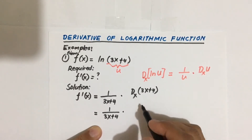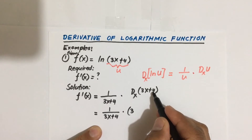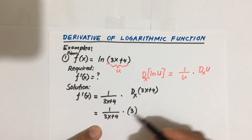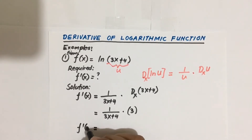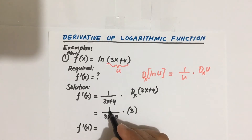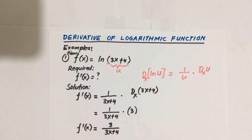Applying the formula, the derivative of u with respect to X gives us: 1 times 3, that is 3, divided by 3x plus 4. So F prime of X equals 3 over (3x plus 4). This is our answer for Example 1.